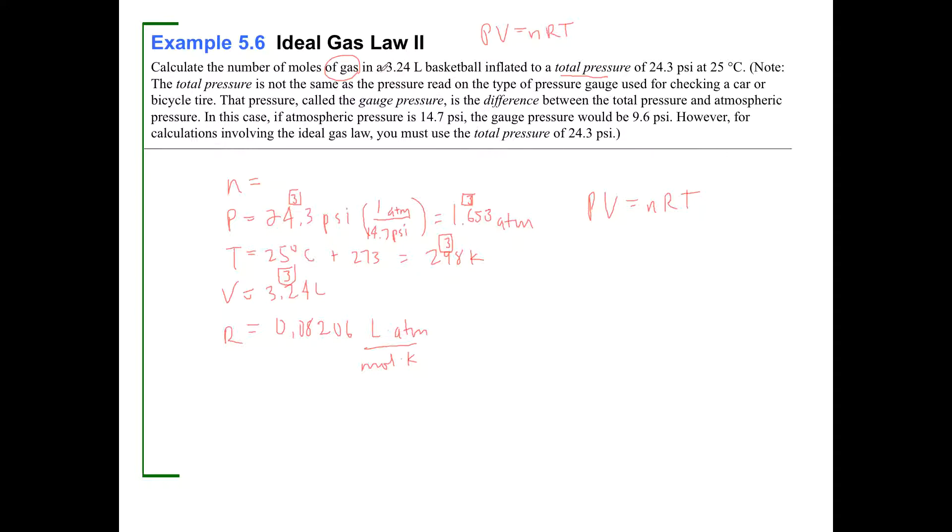The total pressure is not the same as the pressure read on the type of pressure gauge used for checking a car or bicycle tire. That pressure is called the gauge pressure. That's the difference between the total pressure and the atmospheric pressure. In this case, if atmospheric pressure is 14.7, the gauge pressure will be 9.6. However, for calculations, you must use the total pressure. Okay, good. So we did use the right pressure, and we're looking for moles.